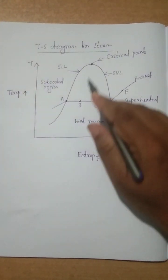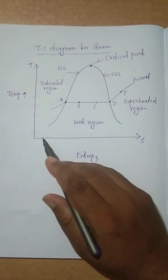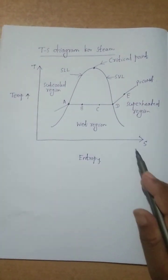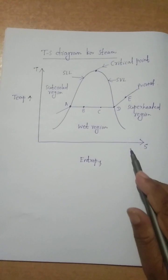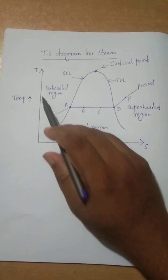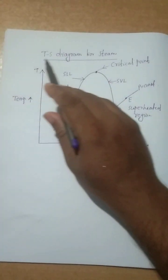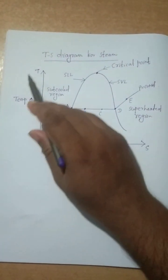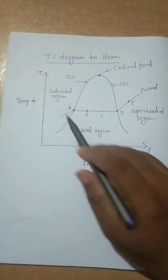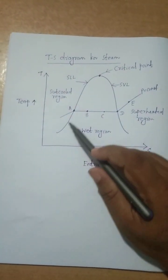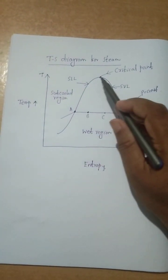On the T-S diagram for steam, along the x-axis we represent entropy and along the y-axis we represent temperature. This shape is the vapor dome.